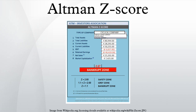The original Z-score component definitions: T1 = working capital / total assets, T2 = retained earnings / total assets, T3 = earnings before interest and taxes / total assets, T4 = market value of equity / total liabilities, T5 = sales / total assets. The Z-score bankruptcy model: Z = 1.2·T1 + 1.4·T2 + 3.3·T3 + 0.6·T4 + 0.999·T5. Zones of discrimination: Z > 2.99 is the safe zone; 1.81 ≤ Z ≤ 2.99 is the grey zone; Z < 1.81 is the distress zone.